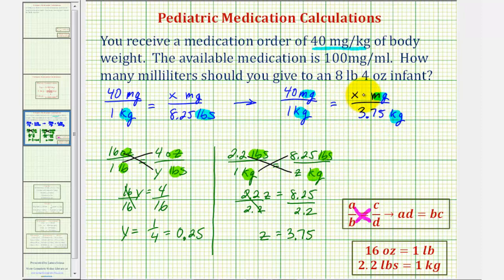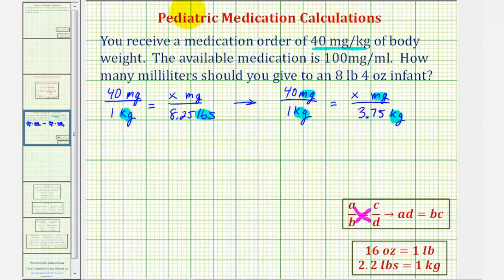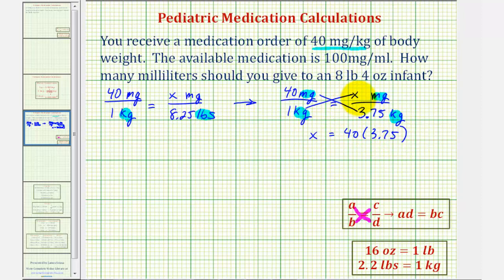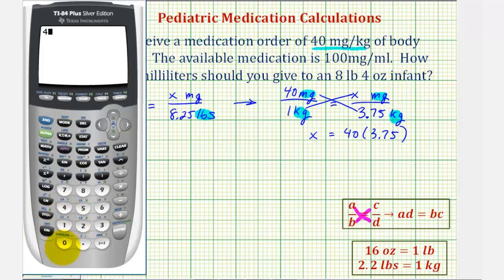Notice finally we do have the same units on the top and on the bottom, so now we can cross multiply and solve for X. We would have 1 times X equals 40 times 3.75. Well, 1 times X would be X, and then 40 times 3.75 will give us the number of milligrams the infant needs. So the infant needs 150 milligrams.